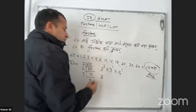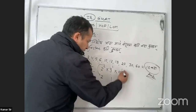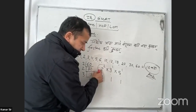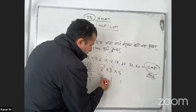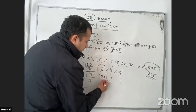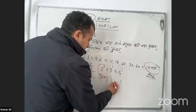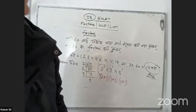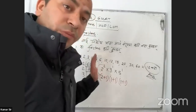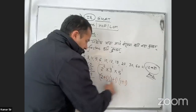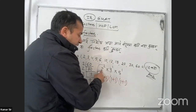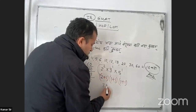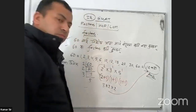Now we have 2 to the power of 3 plus 1. Now we have 2 to the power, 3 to the power, 5 to the power. You: 3 into 2, 2, 4, 3, 2. This one is a trick. There is enough to write and we can work through it again.